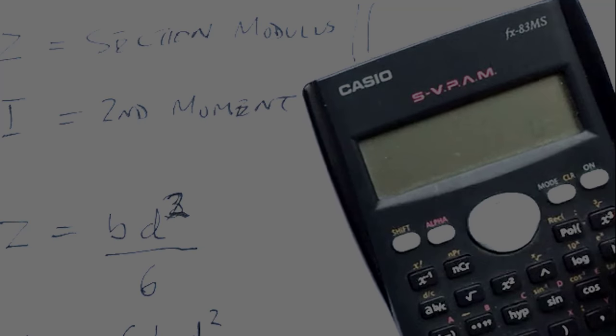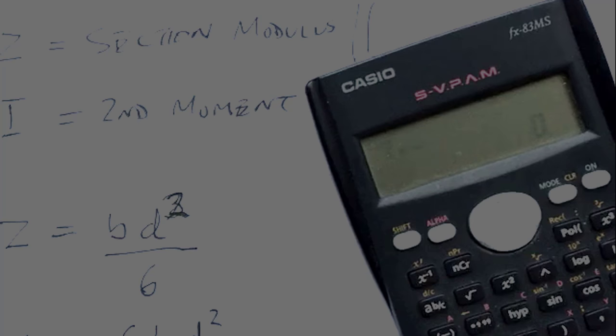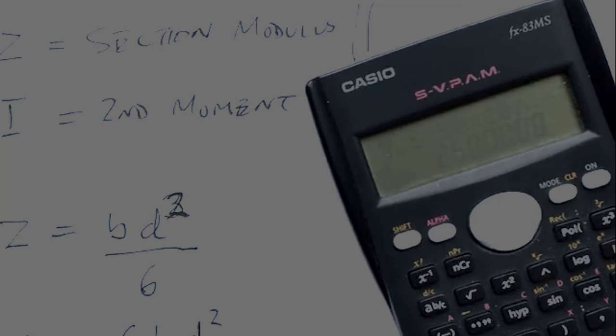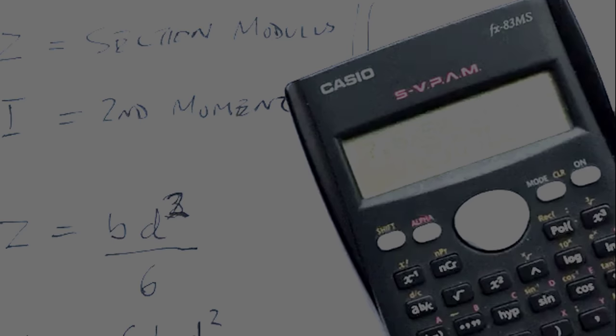7.5 times 50 times 200 squared divided by 6 equals, if you can see that, that's two and a half million.